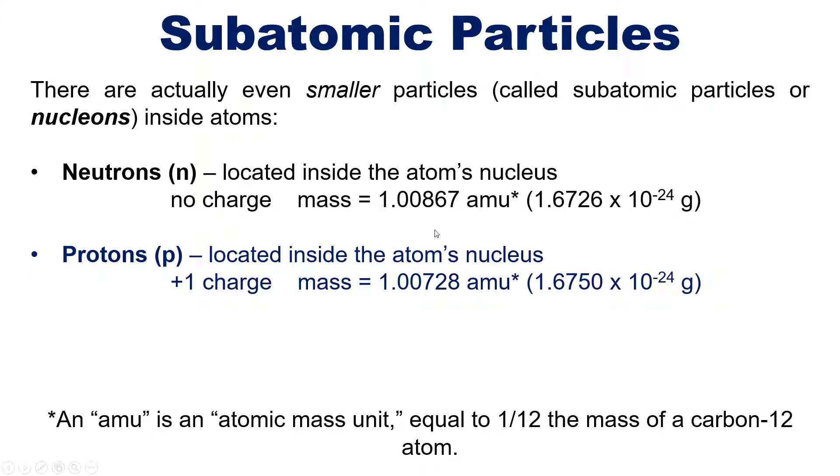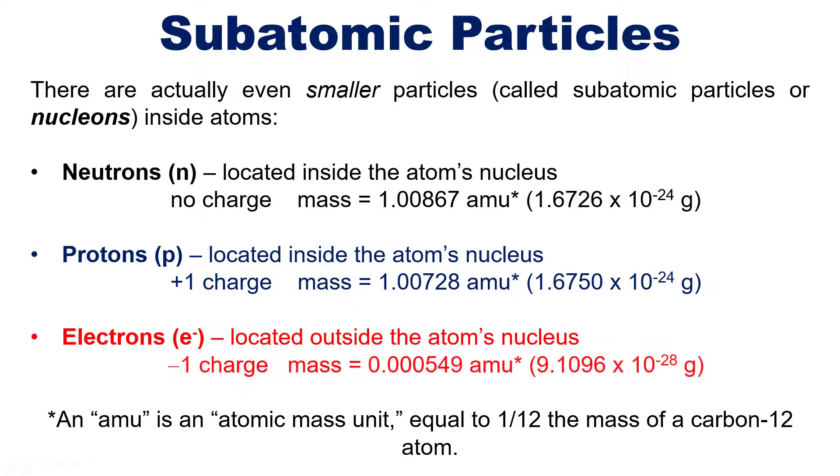And lastly are electrons. They're located outside the atom's nucleus, have a -1 charge, and a very negligible mass - so negligible, in fact, that we for the most part ignore their mass when doing calculations until we get to a later chapter on nuclear chemistry.